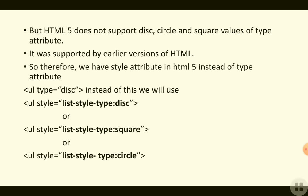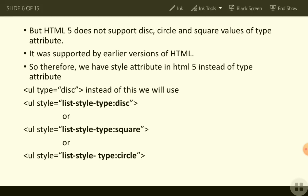In HTML5 — which we are studying, and which was also introduced in Class 11 — HTML5 does not support the disc, circle, and square values of the type attribute. In short, the type attribute is not supported by HTML5; it was supported in earlier versions. So how do we represent unordered lists in HTML5?